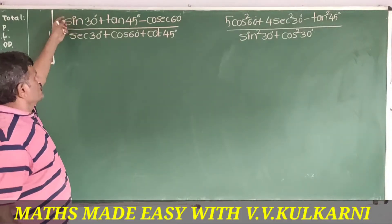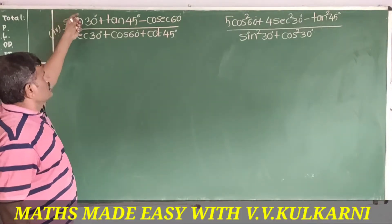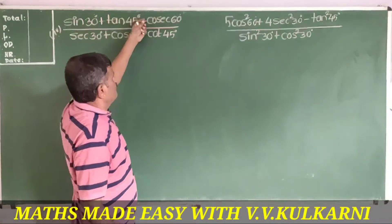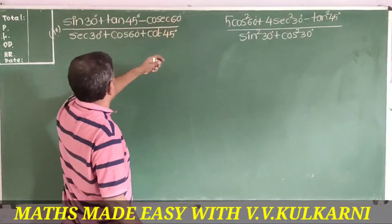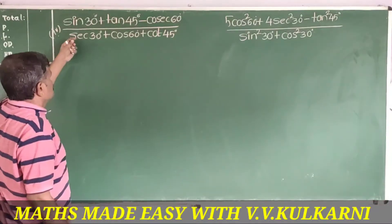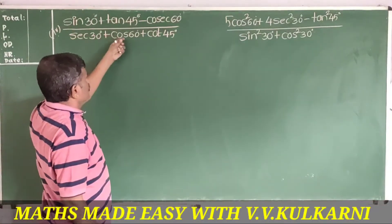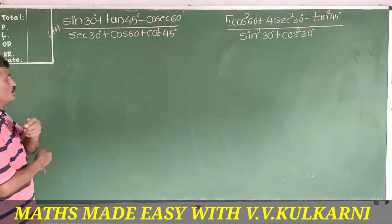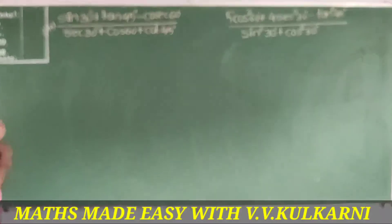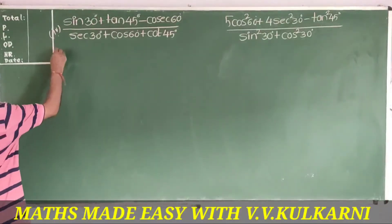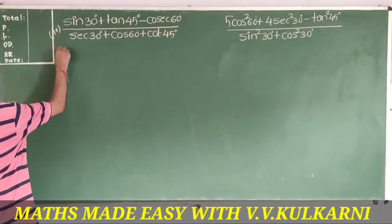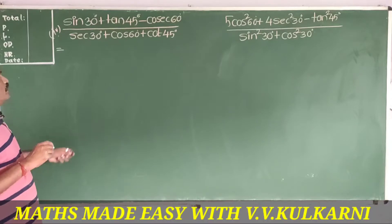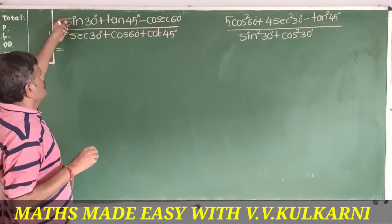The next question reads: sin30 plus tan45 minus cosec60 over sec30 plus cos60 plus cot45. To solve this problem, the first and very important thing is to write the correct trigonometric values.